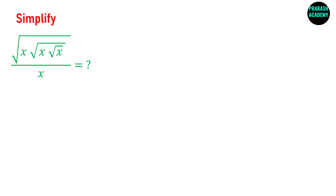In this problem you have to simplify this expression: you have a square root of x, and then again a square root of x, and then again a square root of x, and this divided by x.